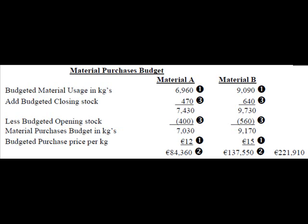Now check if you can see where the €137,550 for material B comes from. Bearing in mind the routine is: the amount needed for production, plus the amount needed for closing stock, less the amount already in stock. Try that for yourself.